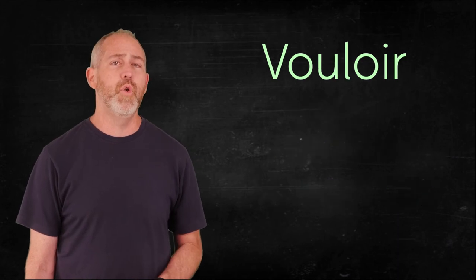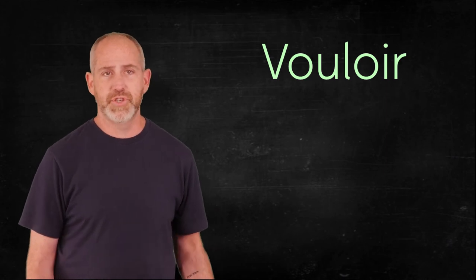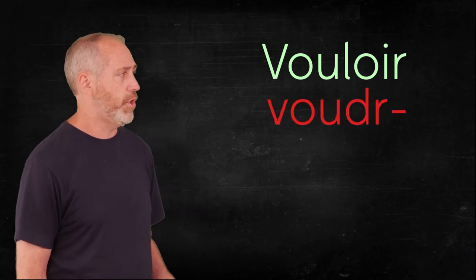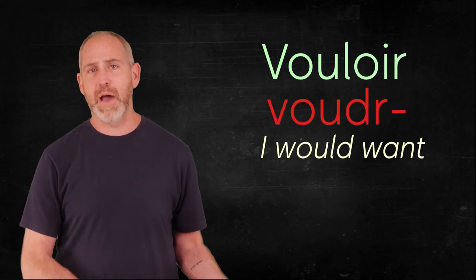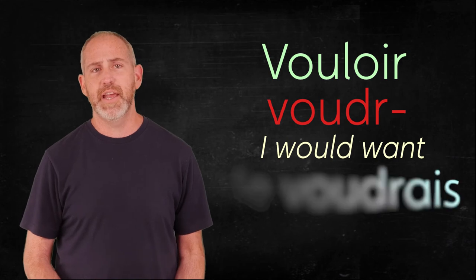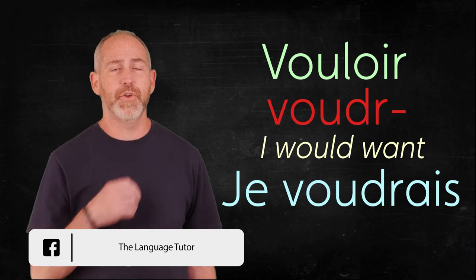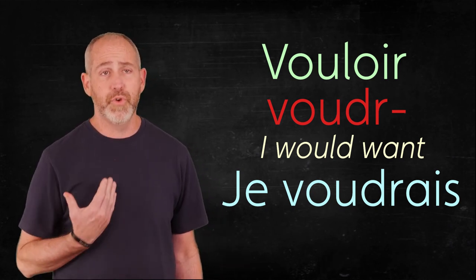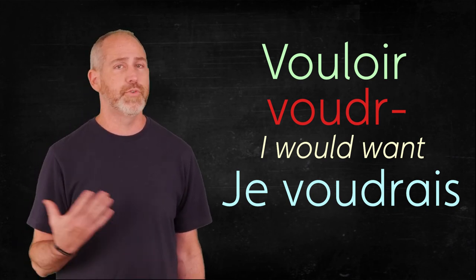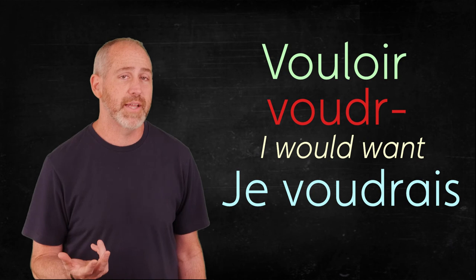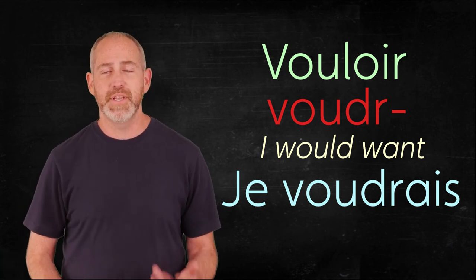The last one is vouloir, which means to want. This is interesting. It uses the stem V-O-U-D-R. Now, if you wanted to say I would want, you could say je voudrais. But this is interesting because a lot of times if you're ordering in a restaurant, instead of saying je veux, je veux, I want something, a polite way of saying is je voudrais, je voudrais. So I would, it's like saying I would like, I would want, but it kind of implies I would like, like we would say in English.